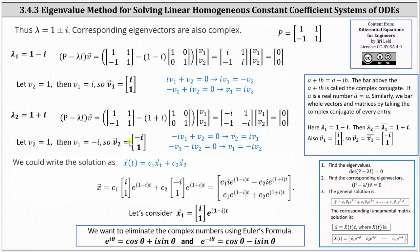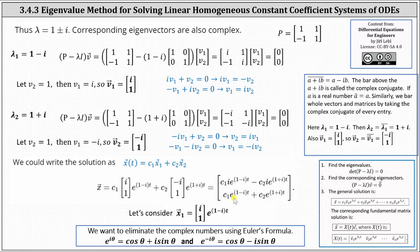Now at this point, we could write the general solution in the form of X of t equals C₁ times X₁ plus C₂ times X₂, like we did when we had two distinct real eigenvalues and corresponding eigenvectors. This would give us X equals C₁ times the eigenvector [i, 1] times e to the power of one minus i times t, plus C₂ times the eigenvector [negative i, 1] times e to the power of one plus i times t. But we don't want to give the general solution in this form — we prefer to give the general solution without complex numbers.